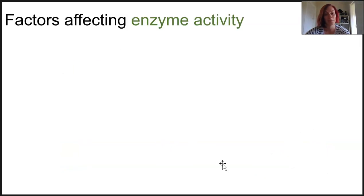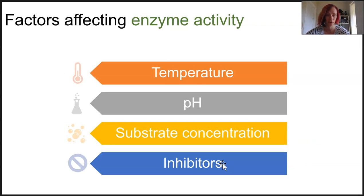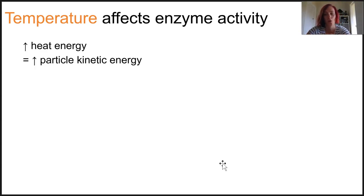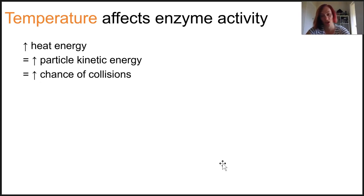Our main focus is the types of conditions which impact the functioning of an enzyme, and there are four we're going to focus on — they are colour coded throughout. Let's consider temperature first. If an environment increases in heat energy, that gives more kinetic energy to the particles, which means they're going to vibrate a lot more and in turn actually move more and collide more.